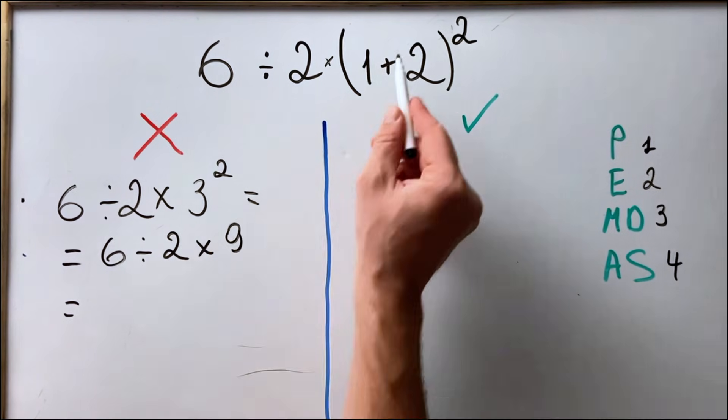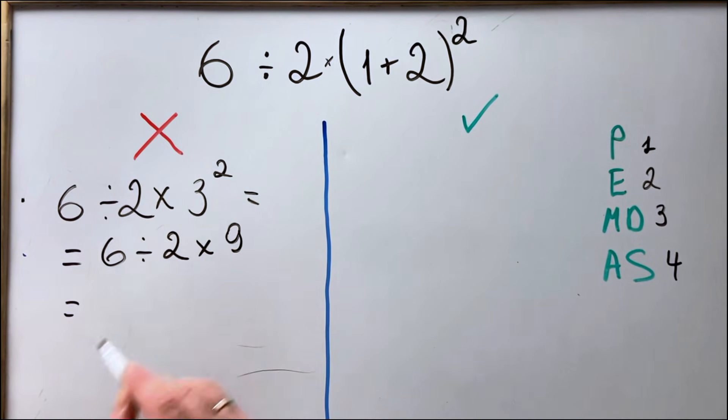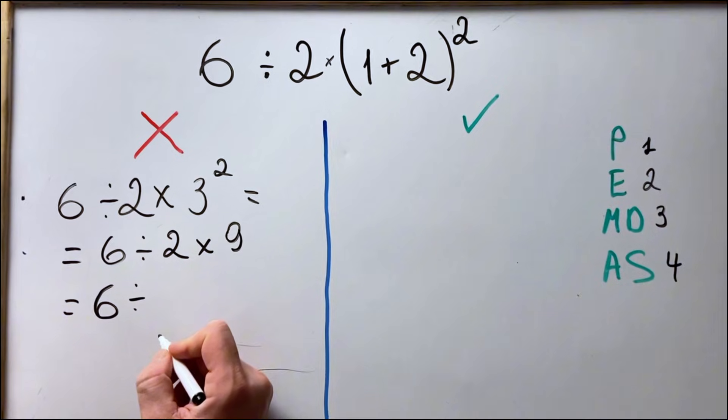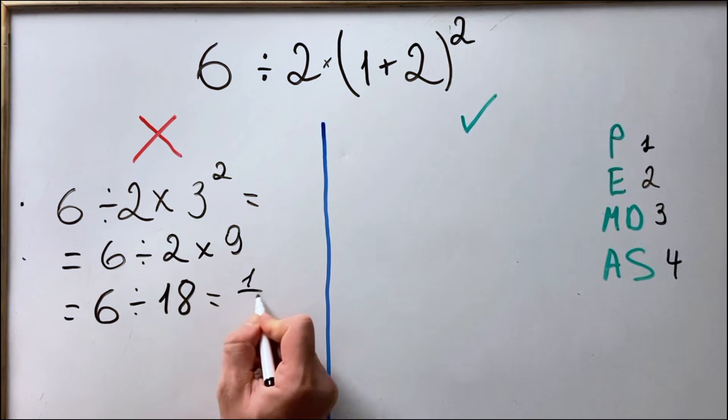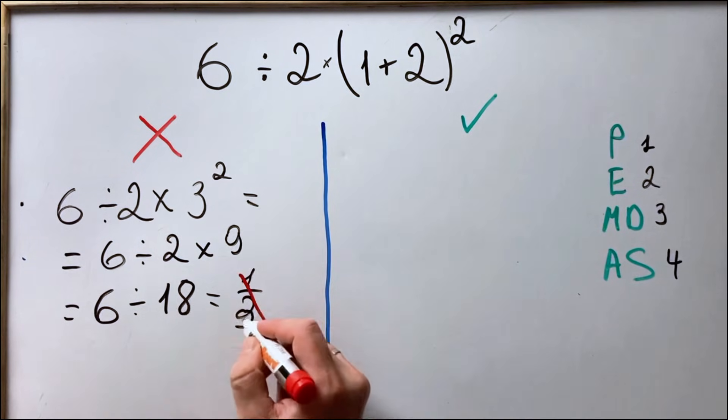After doing the parenthesis and the exponents, people tend to do the multiplication first. So what they get is 6 divided by 18, which is one-third. But of course, this type of solving is wrong.